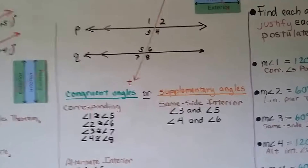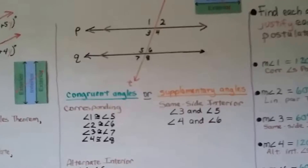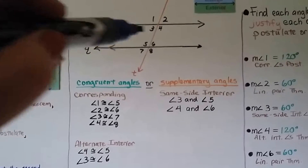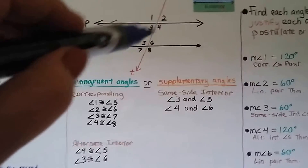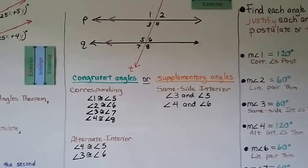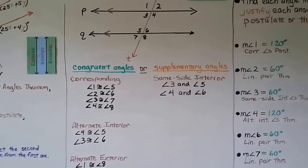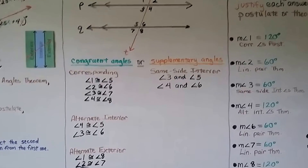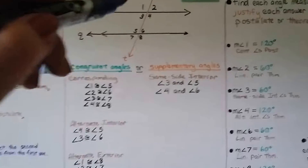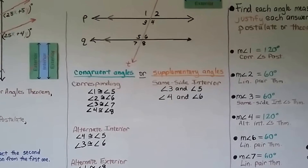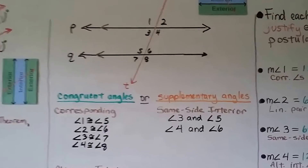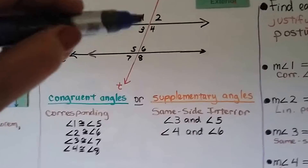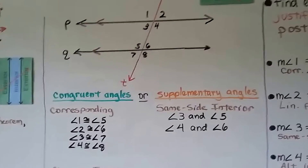Keep looking at the diagram. Alternate interior angles 4 and 5 are in the interior on other sides of the transversal, and angles 3 and 6 are in the interior on different sides. For alternate exterior angles — opposite sides of the transversal but in the exterior — we have angles 1 and 8, and angles 2 and 7. For our supplementary angles, the same side interior pairs are angles 3 and 5, and angles 4 and 6.